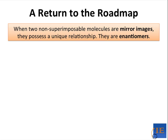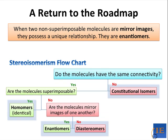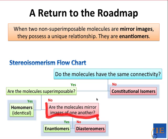When two non-superimposable molecules are mirror images of each other, something special happens and they possess a unique relationship — they're called enantiomers. If we return to the stereoisomerism flowchart, we're now down to the question of: are the molecules mirror images of one another? If they are not mirror images, then we have the case we've seen already — diastereomers — which occurs for alkenes and in tetrahedral compounds that have multiple stereocenters. If the molecules are mirror images, however, then they're called enantiomers, and enantiomers have some special properties that diastereomers don't have.